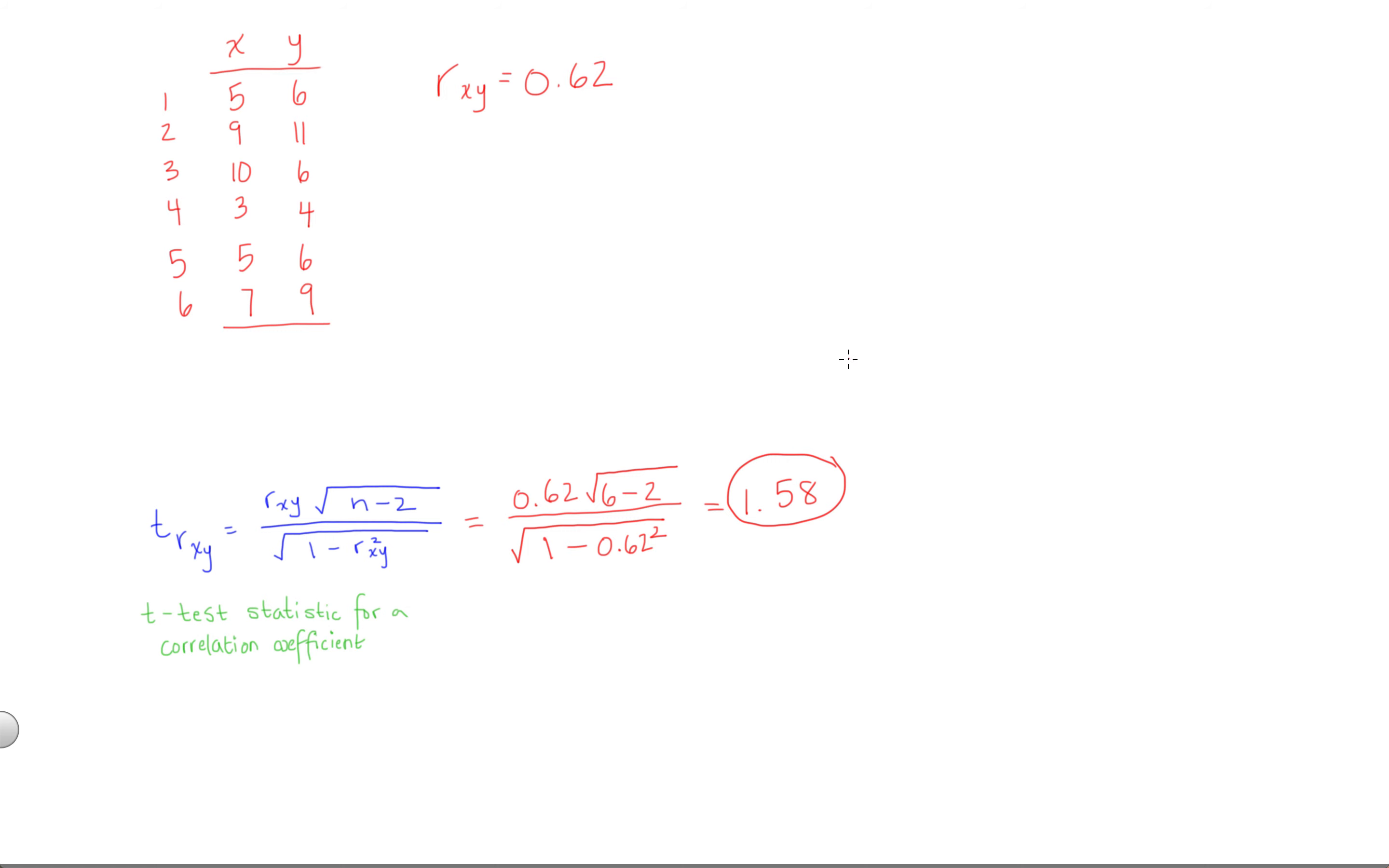The last thing I'll mention here is our coefficient of determination. Remember, the coefficient of determination is just your squared correlation coefficient, and it tells you the percentage of variance that you're accounting for in one variable on the basis of the other. It tells you what percentage of the story you're explaining. In this case, the coefficient of determination would be 0.62 squared, which would come out to approximately 0.38.